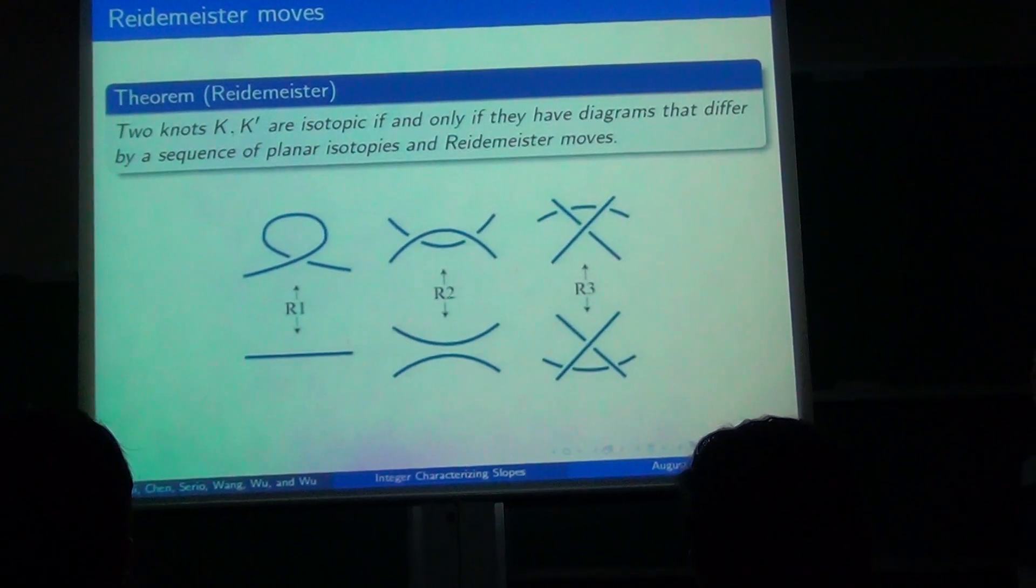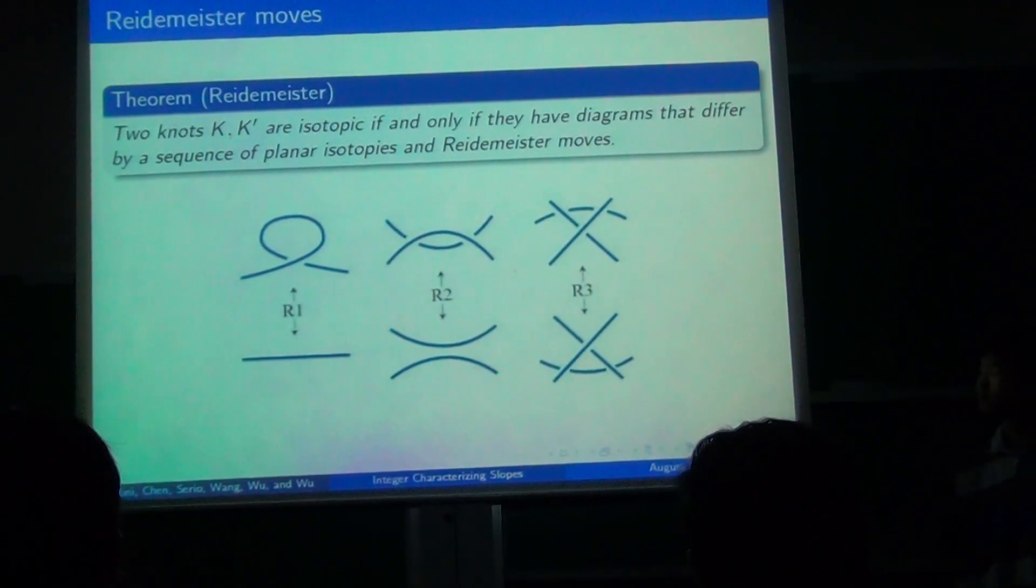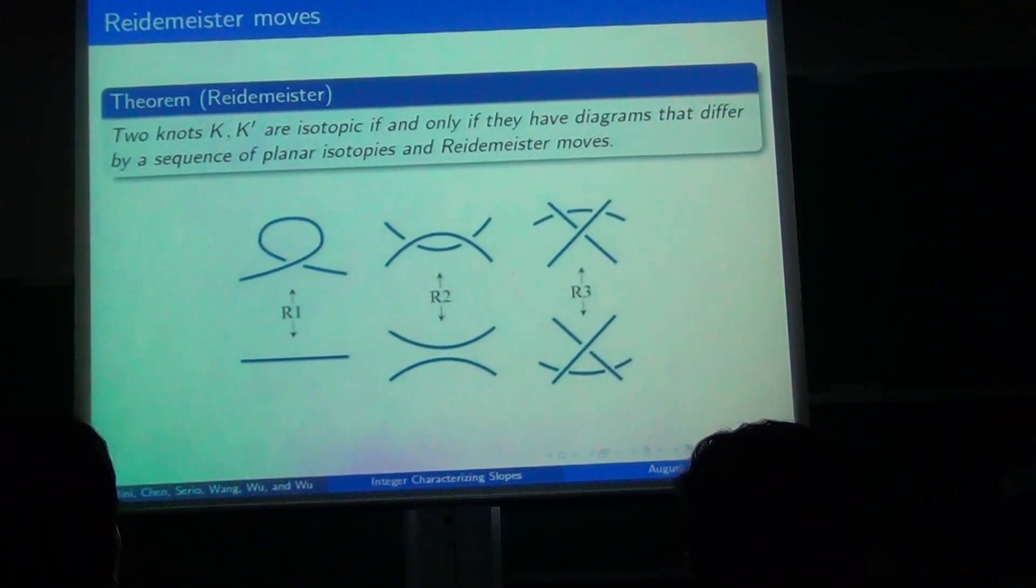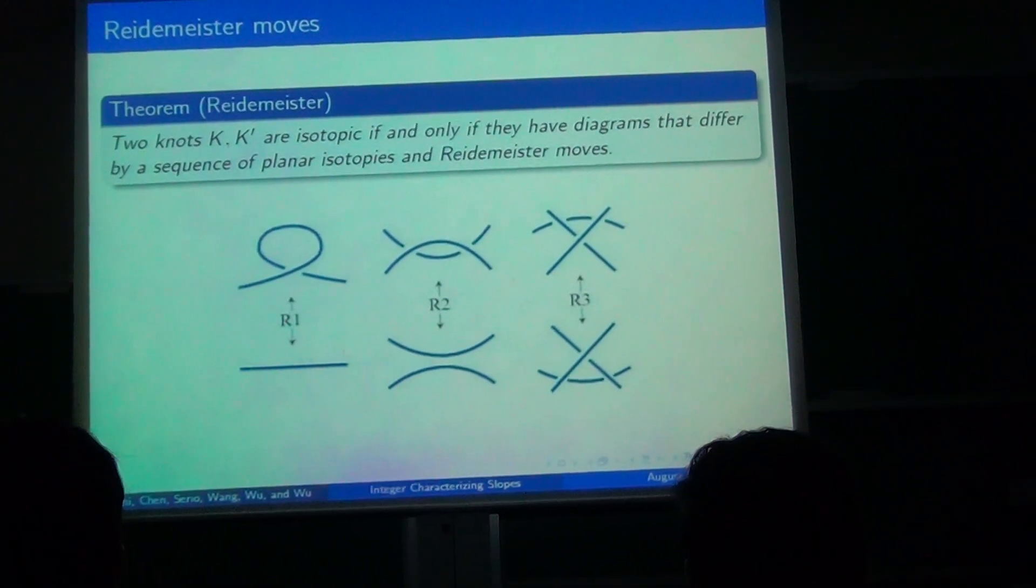We can distinguish knots from one another from their diagrams using Reidemeister moves, which basically allow us to eliminate unnecessary crossings. You can see the three moves here.